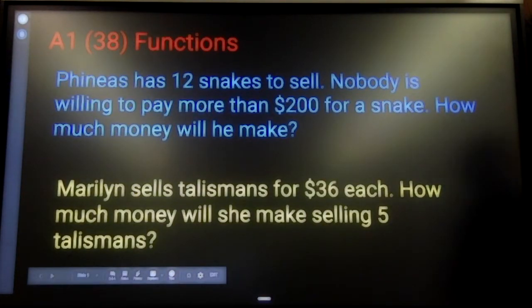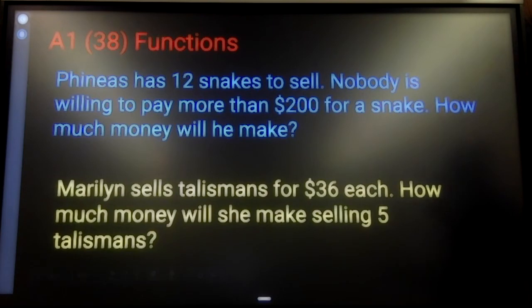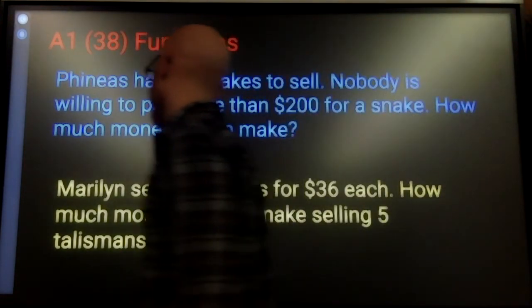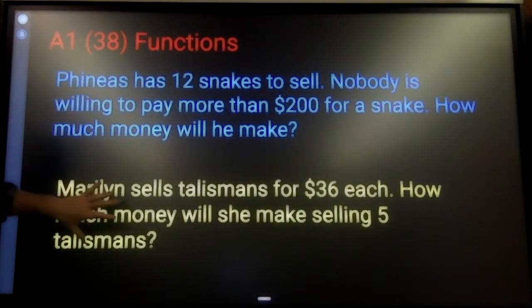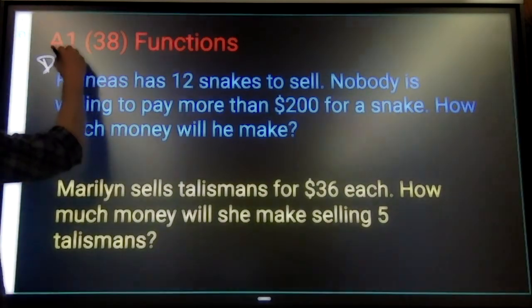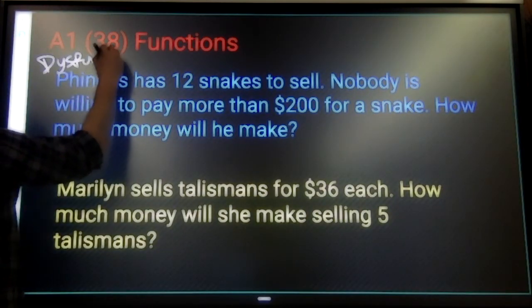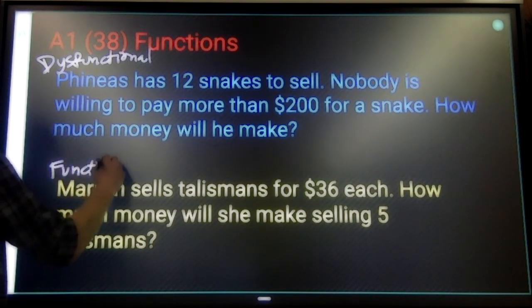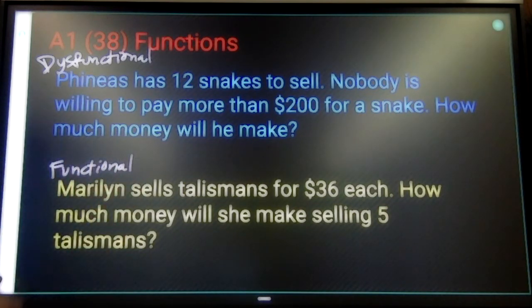Last situation. Phineas has 12 snakes. We looked at this last lesson, lesson 37. I just wanted to display, this is a new problem, the difference between dysfunctional and functional. And maybe our word context will give you more of a picture of what we mean mathematically when we're saying a function or a relation that's not a function.